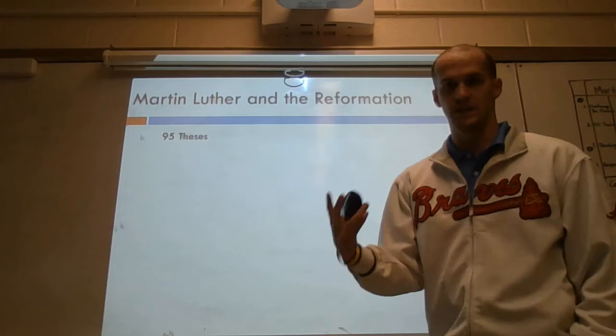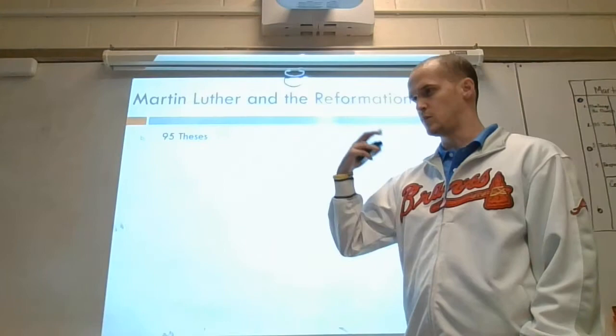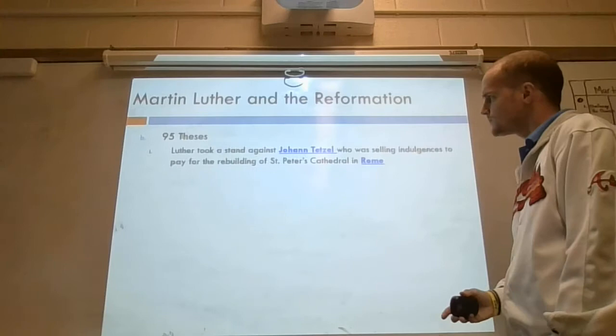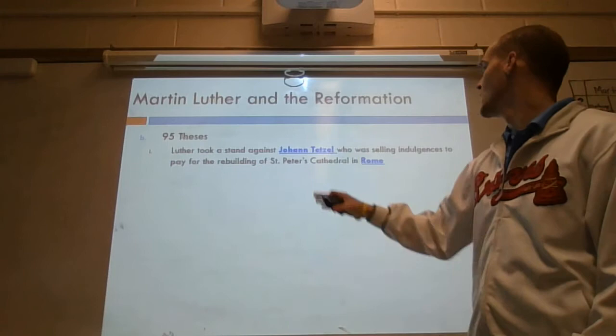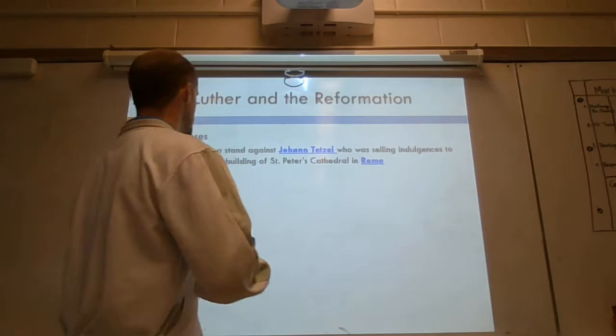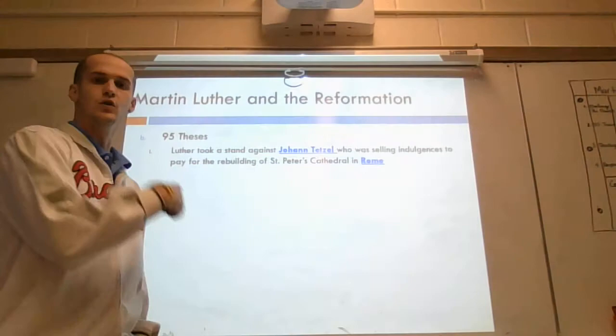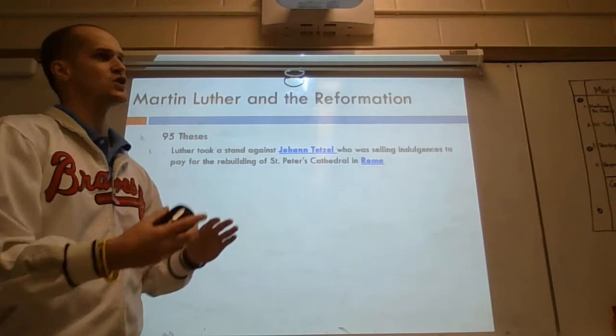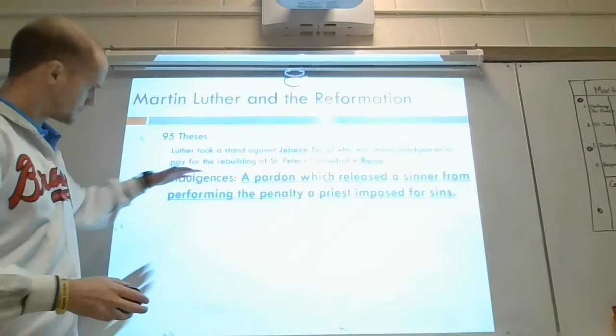This is where his disagreements with religion and the Bible — or what's being taught in religion versus his viewpoints on the Bible — start to change and alter. So this is where we get into number two in your Cornell notes: the 95 Theses themselves. Martin Luther takes a stand against a man by the name of Johann Tetzel, who was selling indulgences throughout Europe. Martin Luther finds out that the money from these indulgences is going to the rebuilding of St. Peter's Cathedral in Rome. He takes issue not only with the indulgences themselves, but where the money is going.